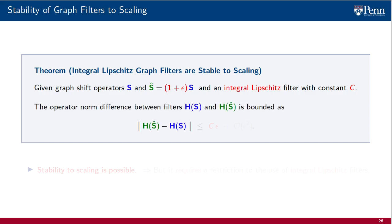the operator norm difference between filters H(S) and H(Ŝ) is bounded by the product of the Lipschitz constant C of the integral Lipschitz filter and the scaling coefficient ε. This is a first order bound. There are higher order terms that we lump in a term of order ε².